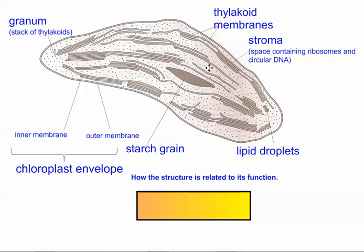The stroma is the fluid-like space around the thylakoids, and that's where the Calvin cycle actually happens. You also have a few other components: lipid droplets, and starch grains — which form when glucose produced in photosynthesis gets accumulated and condensed into starch.